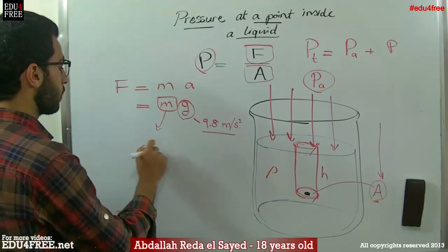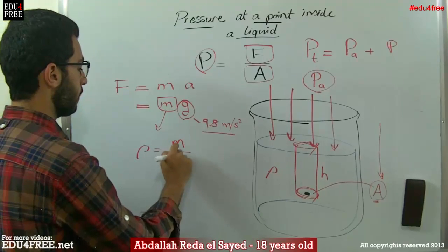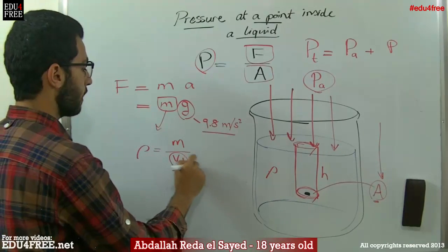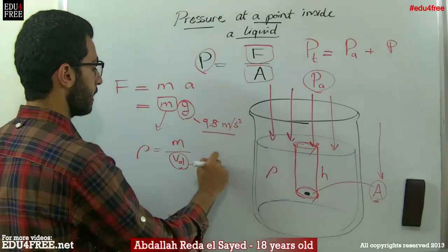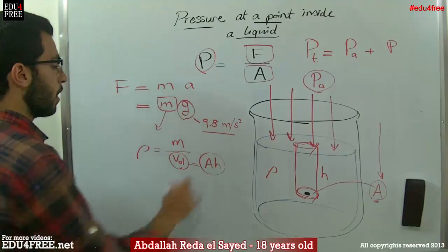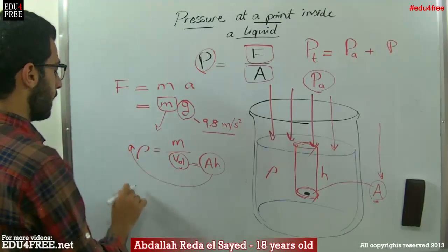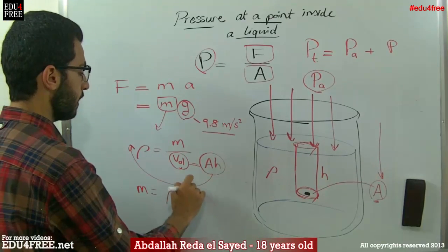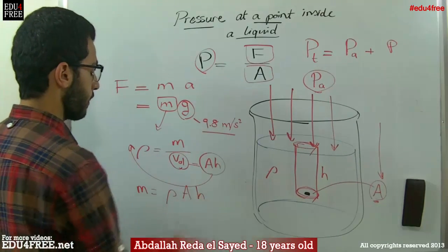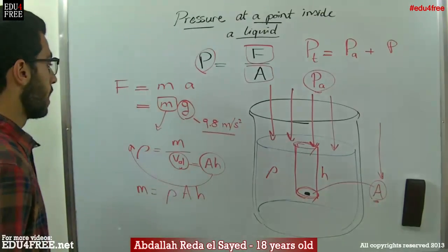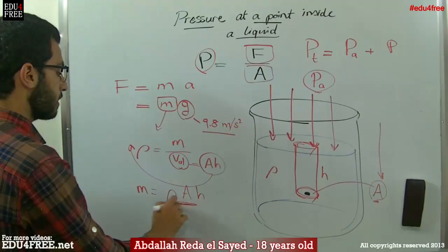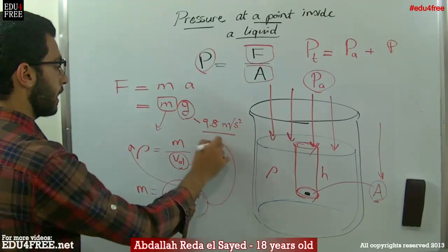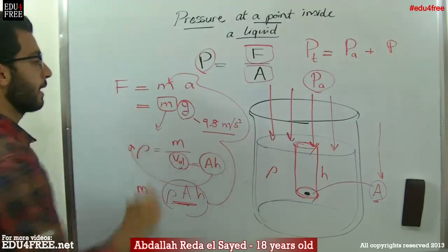And this volume has a density rho. Accordingly, as rho equals the mass per volume, and we already know that the volume equals A multiplied by H, the mass will equal the density multiplied by the cross-sectional area multiplied by the height.